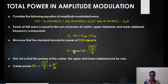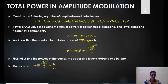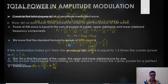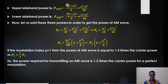Starting with carrier power PC: the amplitude of the unmodulated carrier is AC, so PC = (AC/√2)²/R = AC²/2R. For the upper sideband, the amplitude is μAC/2, so PUSB = (μAC/2 / √2)²/R = μ²AC²/8R. Since the LSB has the same amplitude, PLSB = μ²AC²/8R as well.